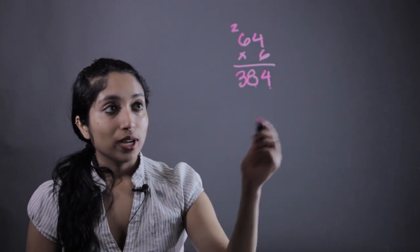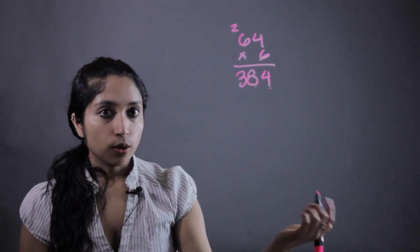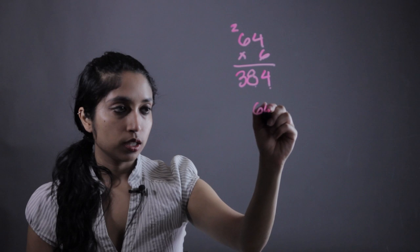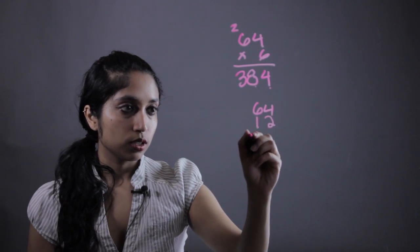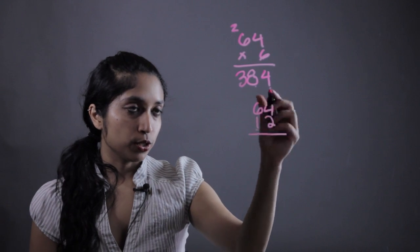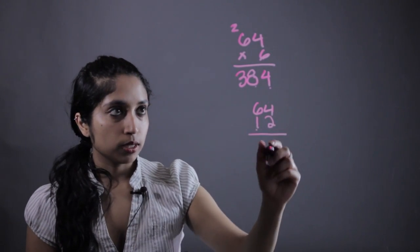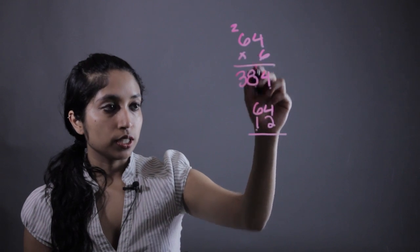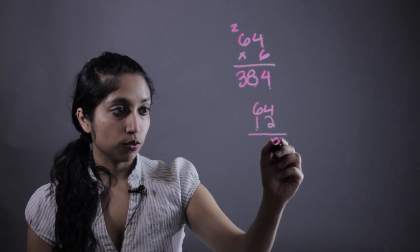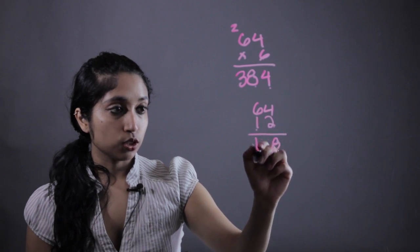But if we have something that has multiple digits, like what if it's 64 times 12? It's like now these are 2 times 2. What do you do? Well, it's pretty simple. Do the same thing we did initially with the 2. So 2 times 4 is 8, 2 times 6 is 12.